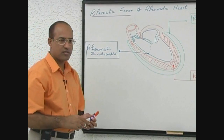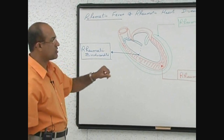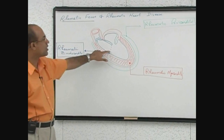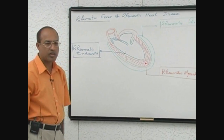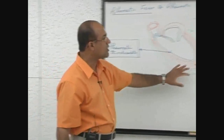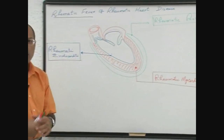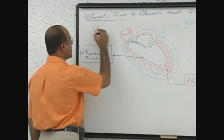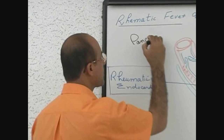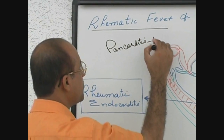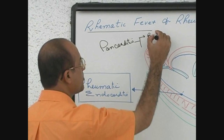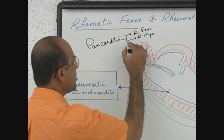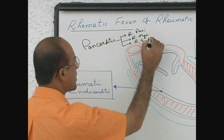In some patients, out of these three features — rheumatic pericarditis, myocarditis, and endocarditis — one or two components are present. But in some unfortunate patients, all three tissues are involved. If all three tissues are involved, the situation is called pancarditis. Pancarditis means that the patient has rheumatic pericarditis, rheumatic myocarditis, and rheumatic endocarditis.